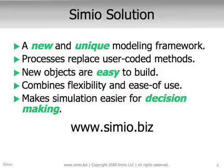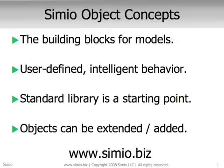The Simio object concepts: objects become the building blocks for models. You build models by taking objects and placing them into your workspace to represent the physical components in the system. Objects can be user-defined and they bring along intelligent behavior. The objects interact to really define the behavior of the system. We provide a standard library of objects as a starting point, but you can build your own objects and add them to libraries to model different types of systems.